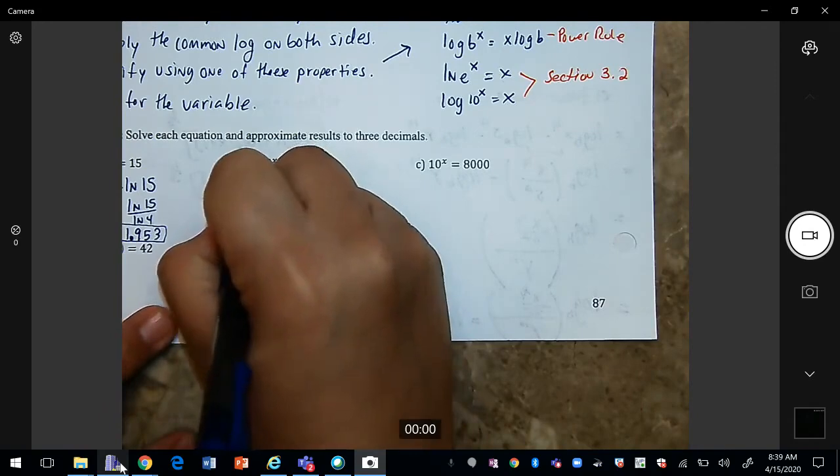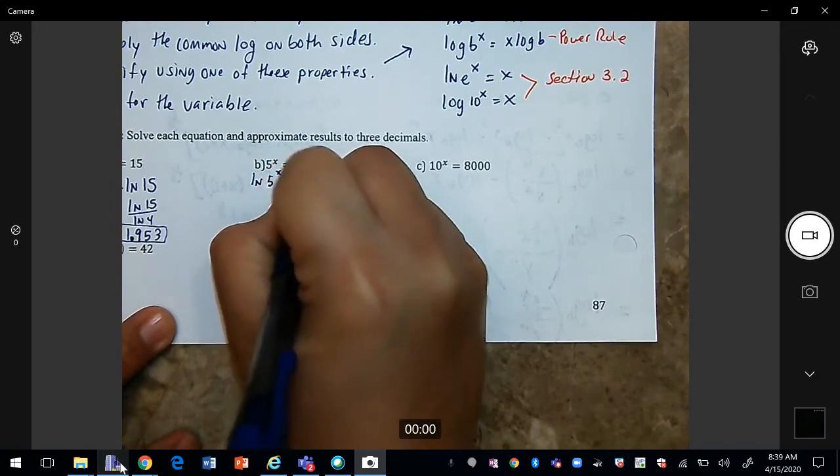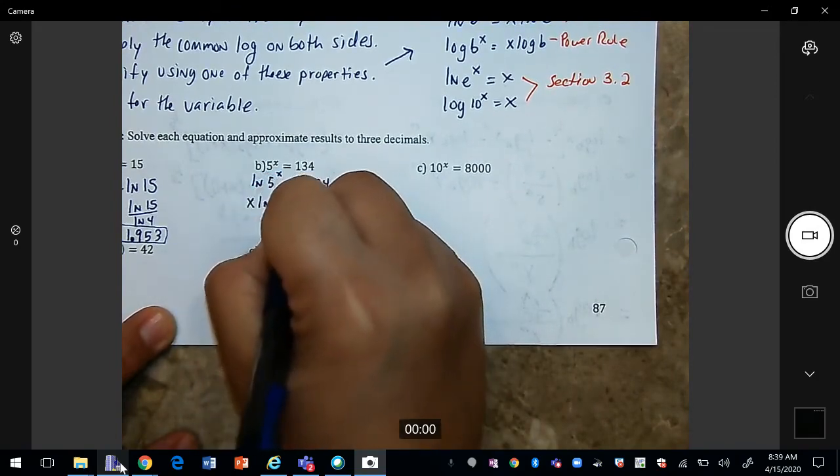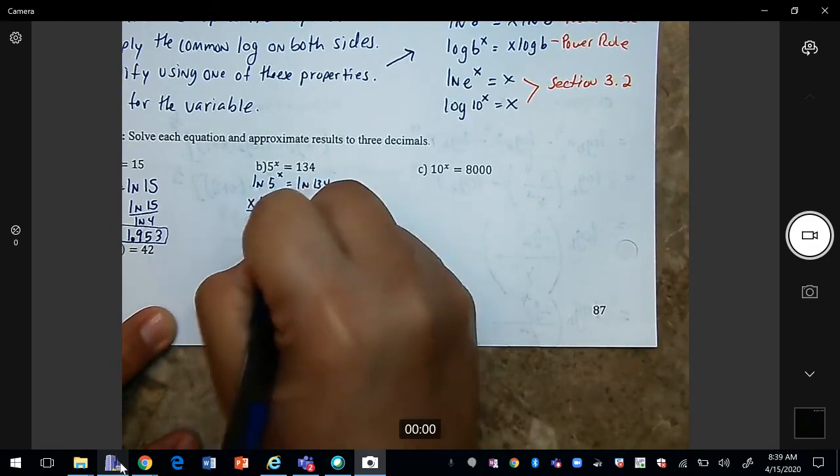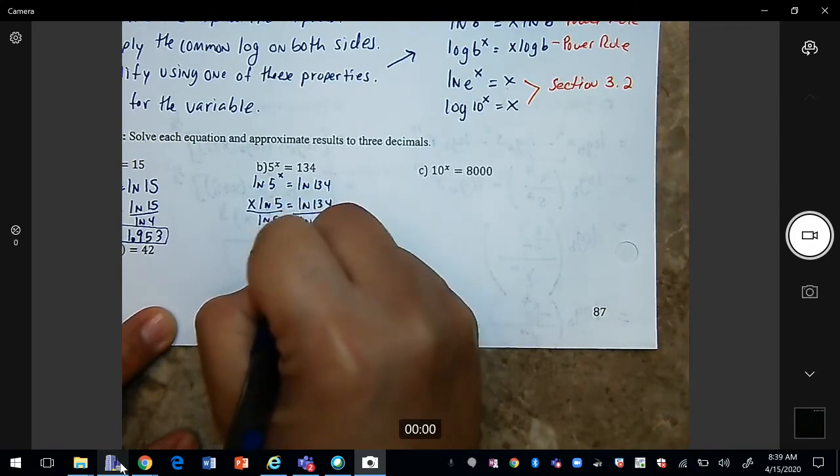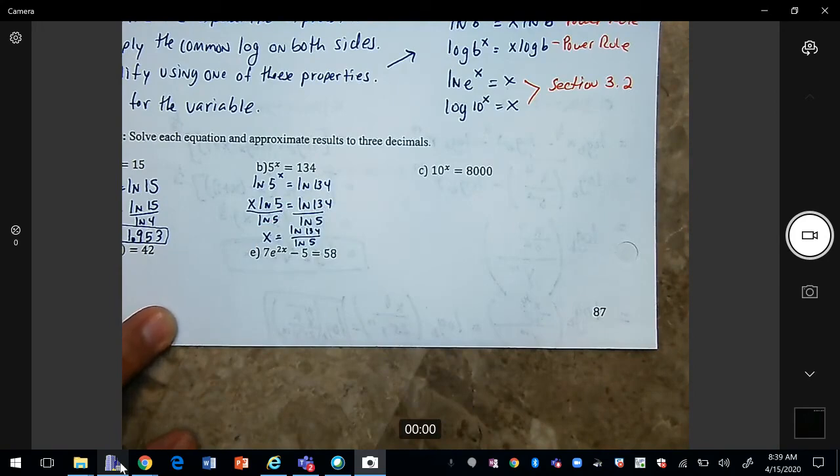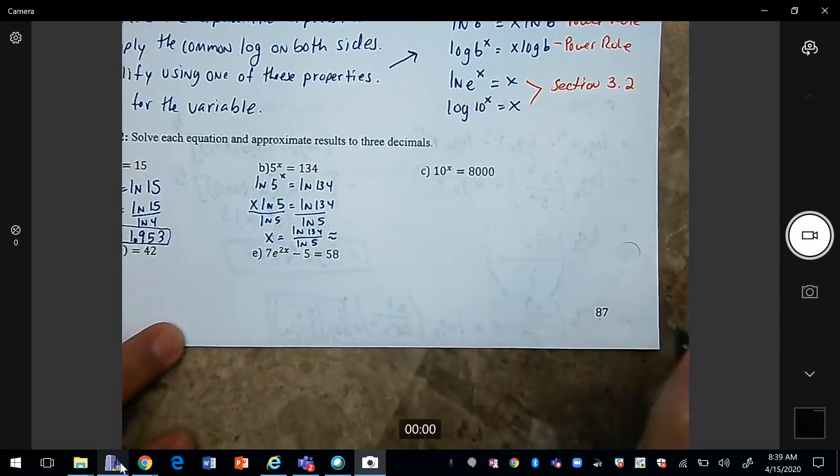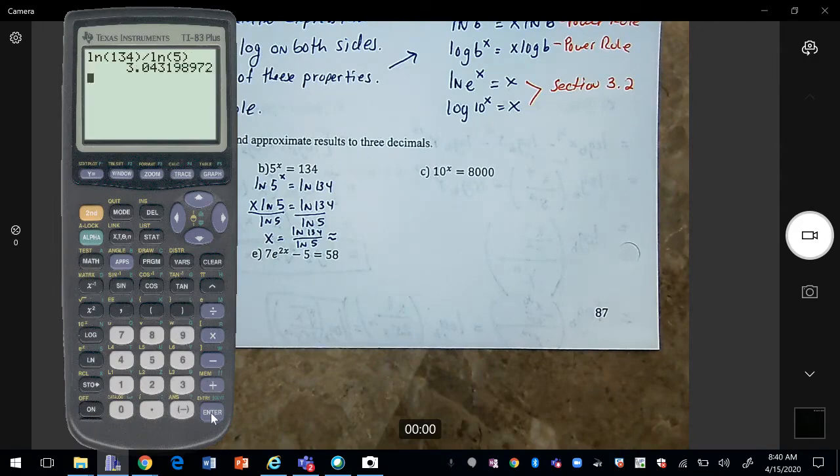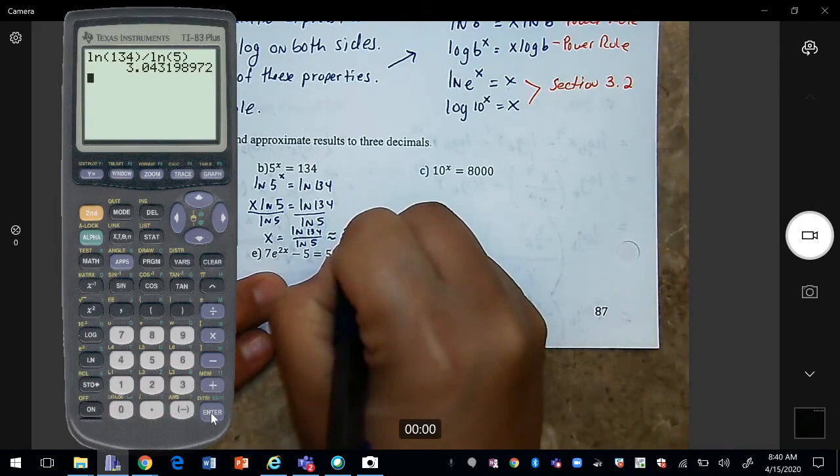So we're going to multiply by natural log on both sides. I'm going to use the power rule and bring the x to the front since it's an exponent. And divide by natural log of 5. If you're using WebAssign and it wants an exact answer, then you would enter natural log of 134 divided by natural log of 5. And the answer would be approximately 3.043.